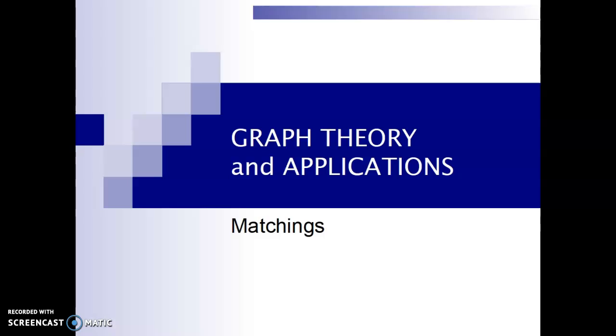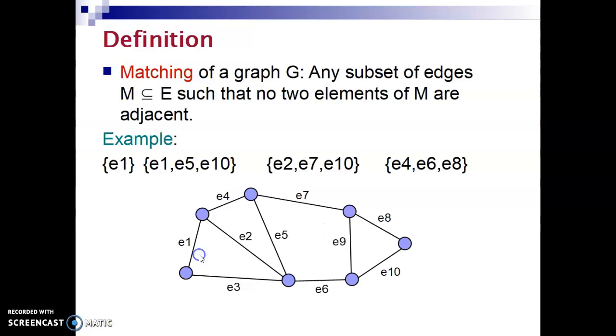Today's topic is matchings. Let's start with the definition. A matching of a graph G is a subset of edges such that no two elements of that subset are adjacent.